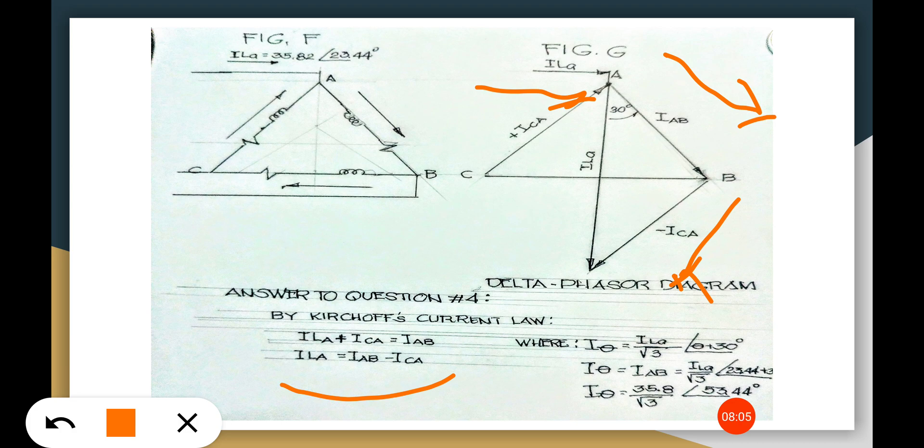And we find this I-phase is the ILa times square root of 3 plus the phase angle plus 30 degrees.